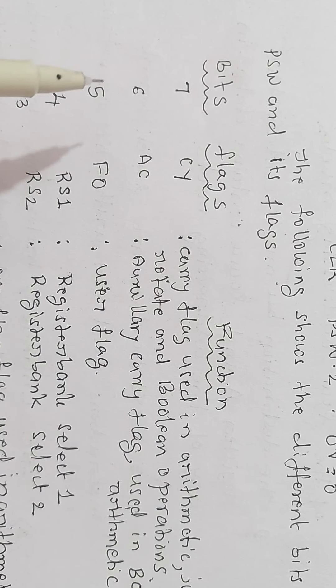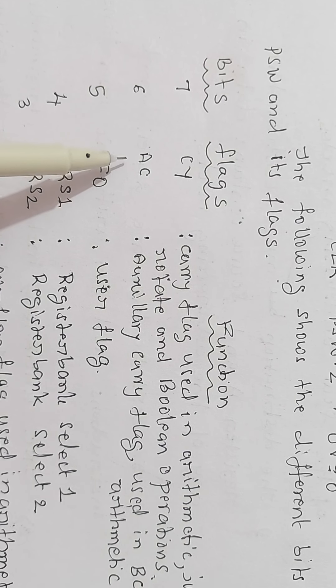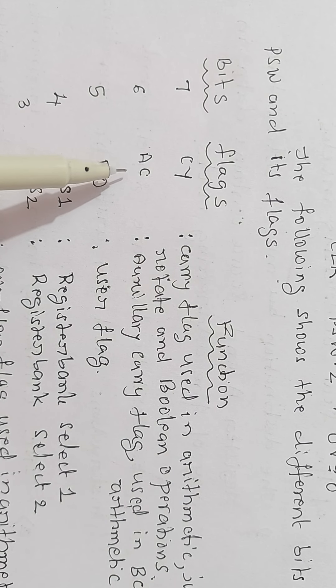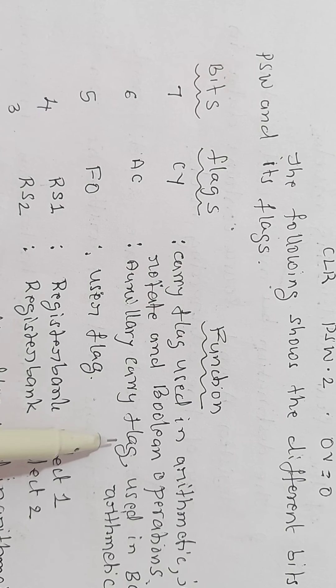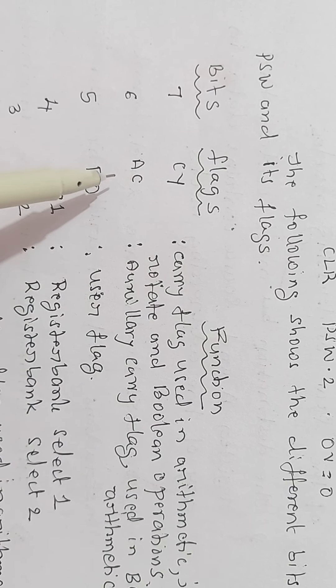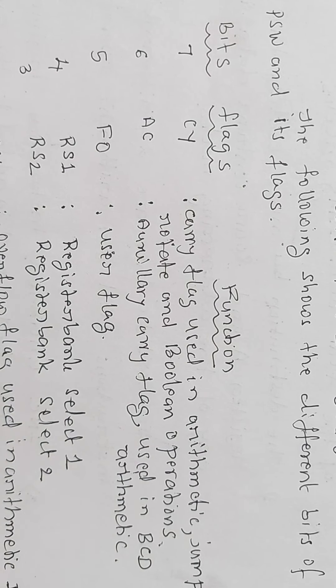Next bit, the program status word bit 6 is the 7th bit. It is auxiliary carry. It is a single memory element used to store 1 or 0. It is called auxiliary carry flag. A flag is a single digit memory element used to store 0 or 1, and carry flag is usually used in binary coded decimal arithmetic operations, BCD arithmetic operations.